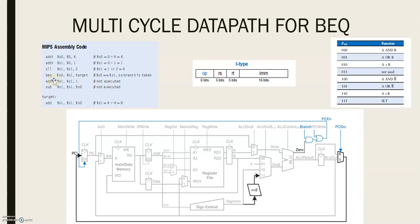So BEQ is a branch when equal instruction. This means that if the value of these two registers are equal, then the target will give you the number of instructions you need to skip in order to reach the new destination.